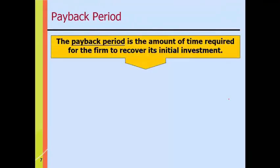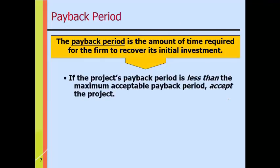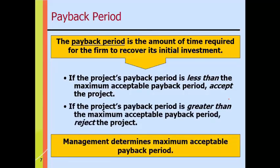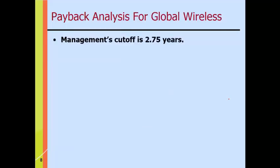The first capital budgeting decision method is the payback period — simply the amount of time required for the firm to recover its initial investment. We compare that against a benchmark: if the project's payback period is less than the maximum we've decided to accept, we go ahead; if not, we reject the project. The trick is determining the proper benchmark. Two years, three years, five years — it depends on how impatient management is and the expectations of the board and shareholders. For our Global Wireless example, let's assume a payback cutoff of 2.75 years.